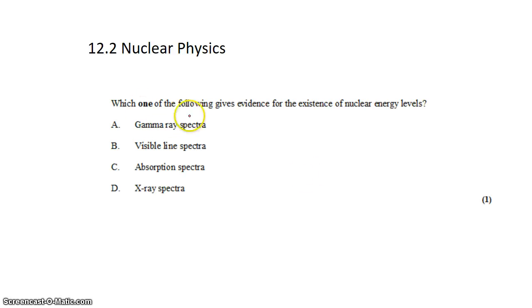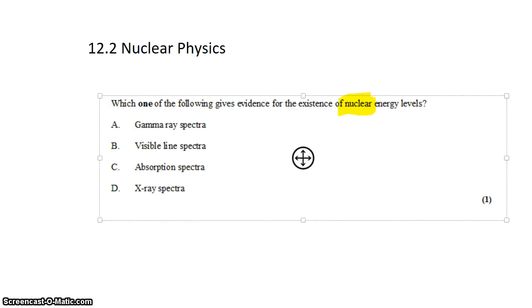The question asks which one of the following provides evidence for the existence of nuclear energy levels. We're quite familiar with the idea of atomic energy levels. These are the orbits that electrons are restricted to. But it turns out there are also nuclear energy levels. Energy levels that the nucleus of the atom is also restricted to.